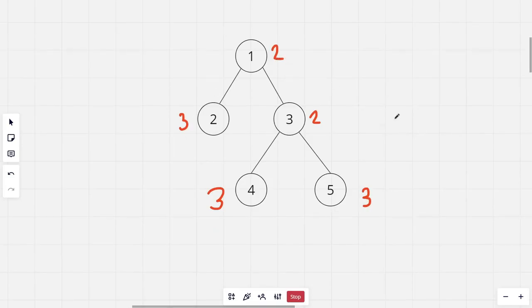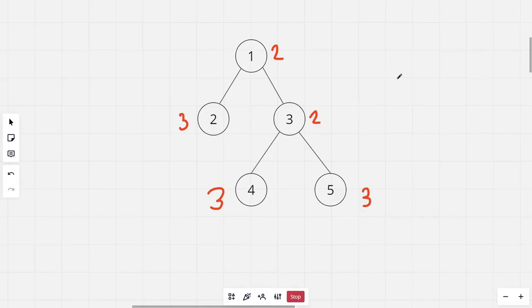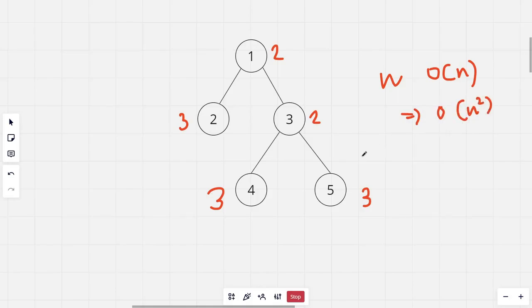The brute force solution would be to run a DFS for each node and find the furthest node from that node. For n nodes we run the DFS and the time complexity is O(n), so the total time complexity comes out to be O(n²), which is not very efficient and won't work. We need to develop an efficient method to find the furthest distance for each node to any other node.